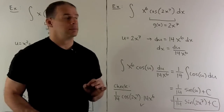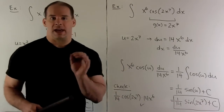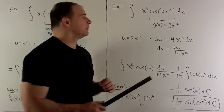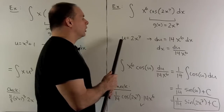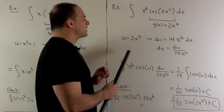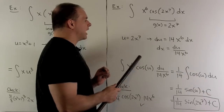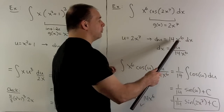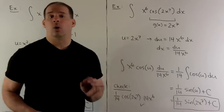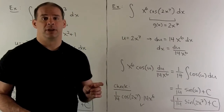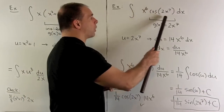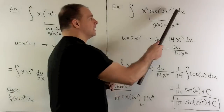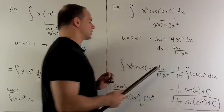Let's try another one with a trig function: the indefinite integral of x to the sixth times cosine of 2x to the seventh, dx. We target the inside — it's going to be 2x to the seventh power, so I set that equal to u. Taking the derivative gives du over dx equals 14x to the sixth, and moving the dx to the other side gives dx equals du over 14x to the sixth. We substitute: put u in for 2x to the seventh in the cosine, leave the x to the sixth alone hoping it goes away, and put du over 14x to the sixth for dx.